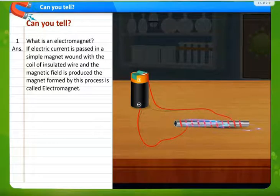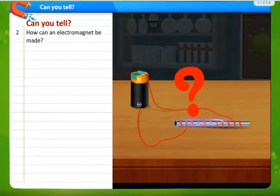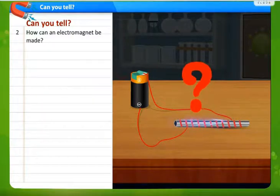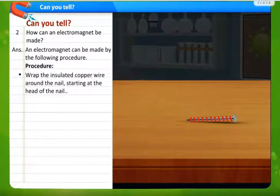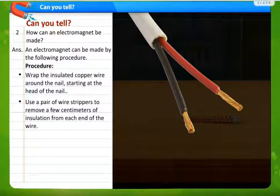You can see how electromagnet can be created. Now an electromagnet can be made by the following procedure. Wrap the insulated copper wire around the nail starting at the head of the nail. Use a pair of wire strippers to remove a few centimeters of insulation from each end of the wire.